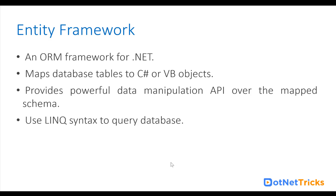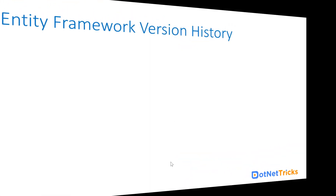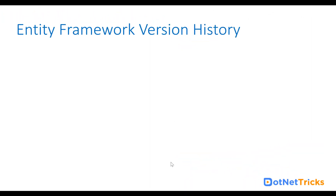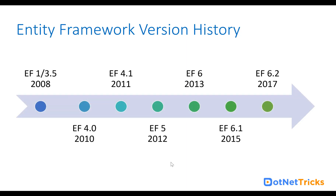So this is about the Entity Framework. Now let's have a look at the Entity Framework version history — when the first version came and what the latest version is right now. Entity Framework was initially introduced in 2008 with Visual Studio 2008. We can call it Entity Framework 1, or Entity Framework 3.5, because at that time they didn't give it a formal name.